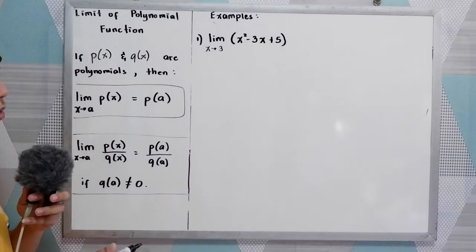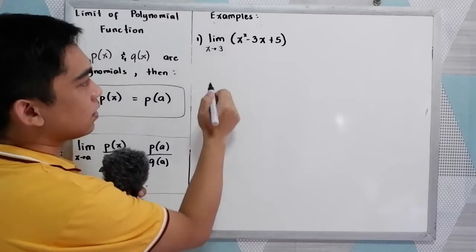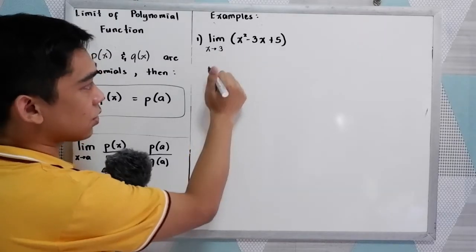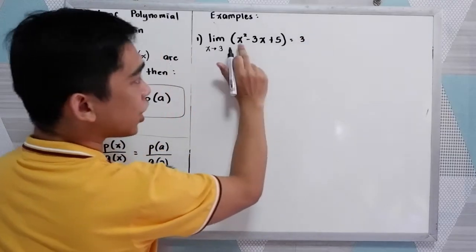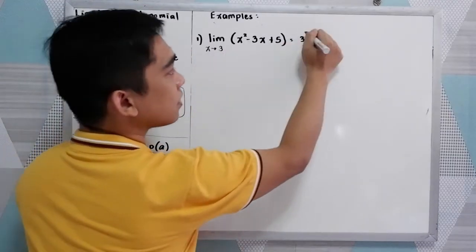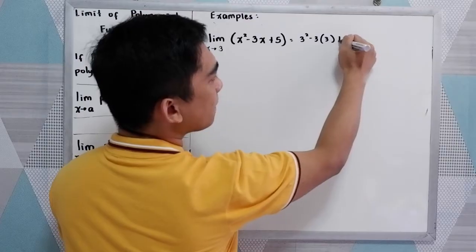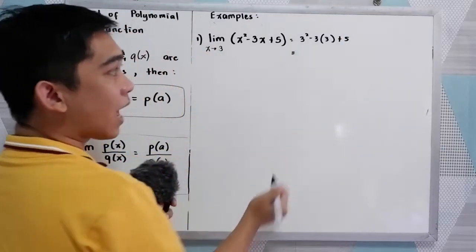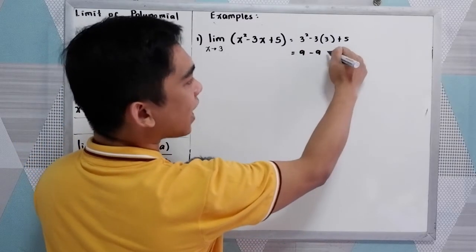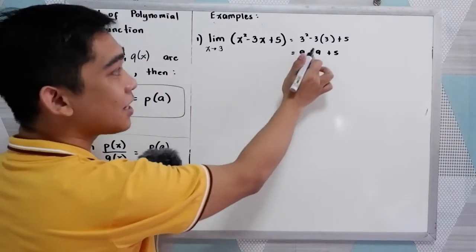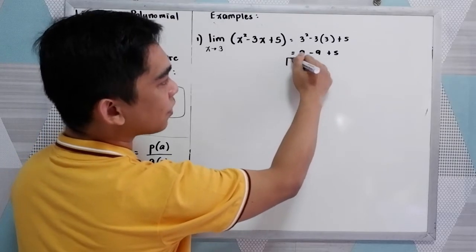According to the limit of polynomial function, we just substitute our A, which is 3, in place of X. So we have 3 squared minus 3 times 3 plus 5. That gives us 9 minus 9 plus 5. Nine minus 9 is 0, plus 5 gives us 5. So 5 is the value of our limit.